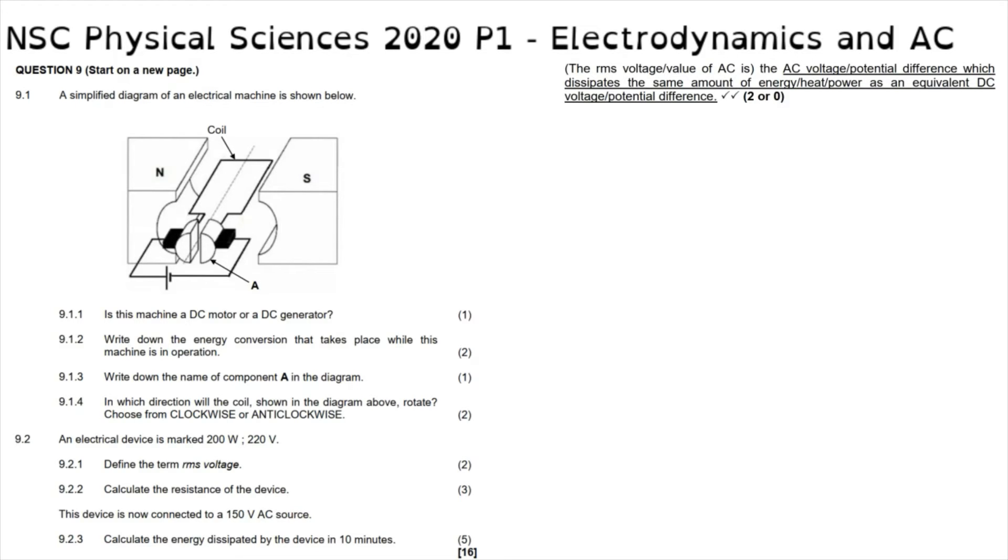Question 9 reads: a simplified diagram of an electrical machine is shown below. 9.1.1: Is this machine a DC motor or a DC generator? The giveaway here is the fact that this circuit, the external circuit, contains a battery. As soon as we see that there is a battery, we know that this circuit must be for that of a motor, because a motor is one that uses electrical energy to convert into mechanical energy.